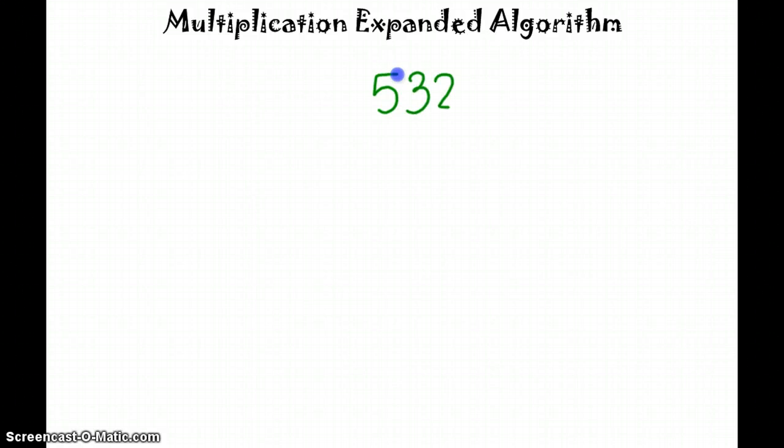Hi boys and girls, I'm back to teach you again the multiplication expanded algorithm. This time the sound should be much better. So we're going to solve today 532 — we're going to do a three-digit number times a one-digit number. We're going to multiply today by 7.